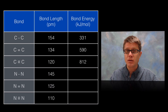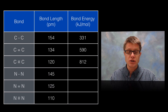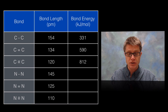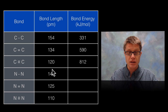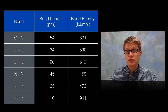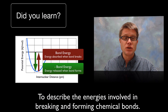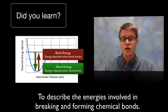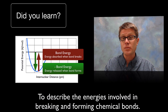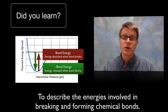If we measure the same thing with nitrogen — single, double, triple bond — we find that we're decreasing the bond length again. So the bond energy is going to increase over time. Did you learn to describe the energies involved in both breaking and forming chemical bonds? I hope so, and I hope that was helpful.